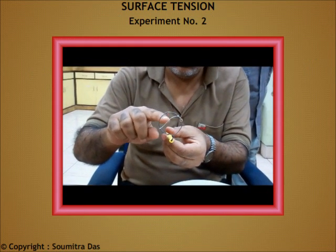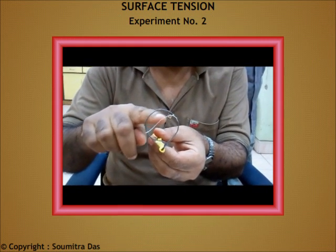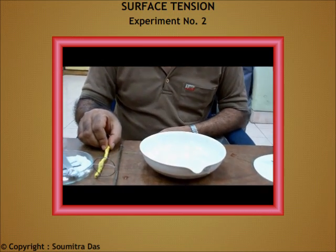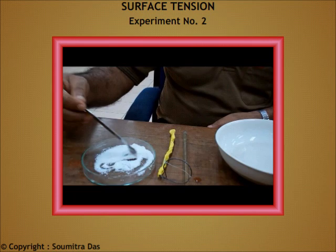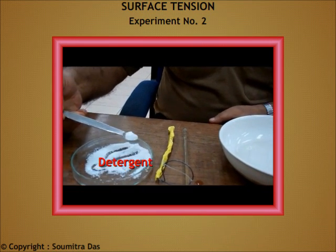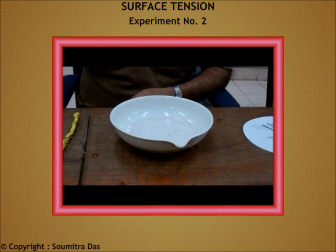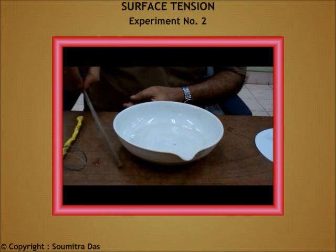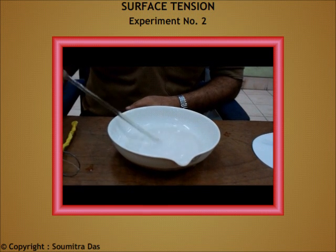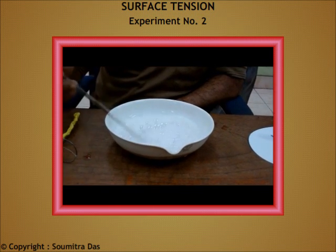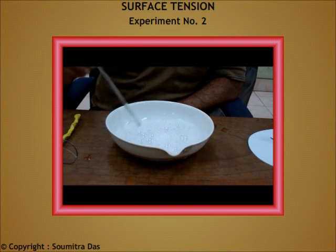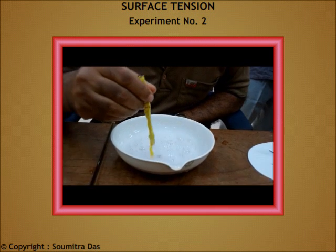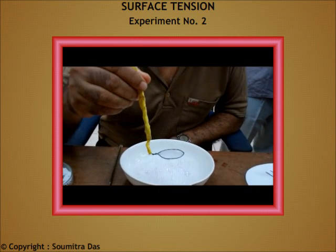Now the next experiment. In this experiment, I have designed a ring made out of wire material with a cotton thread loosely tied up like this. I will make a solution of detergent such that there is enough lather. We get a film of lather over the entire ring like this.